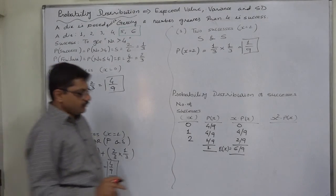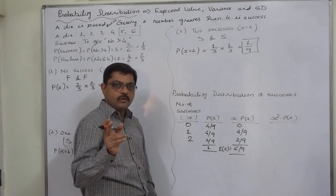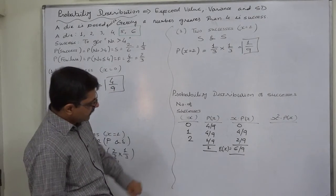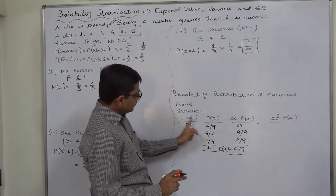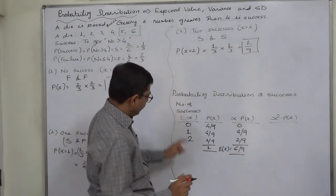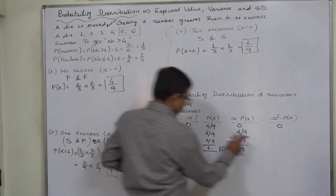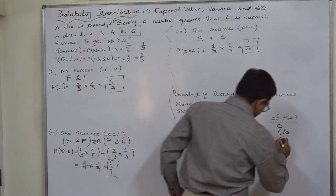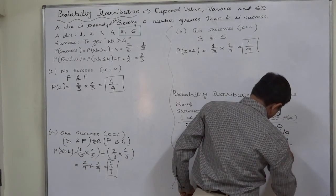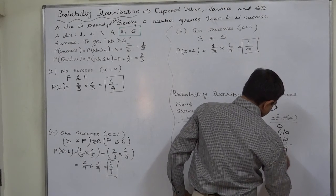To find the variance, we have to find the E of X square, that means expected value of the squared value of the random variable. X square into P of X, it is nothing but X into X into P of X. So, 0 into 0 is 0, 1 into 4 by 9 is 4 by 9, 2 into 2 by 9 is also 4 by 9. So it comes to 8 by 9, that is expected value of X square.